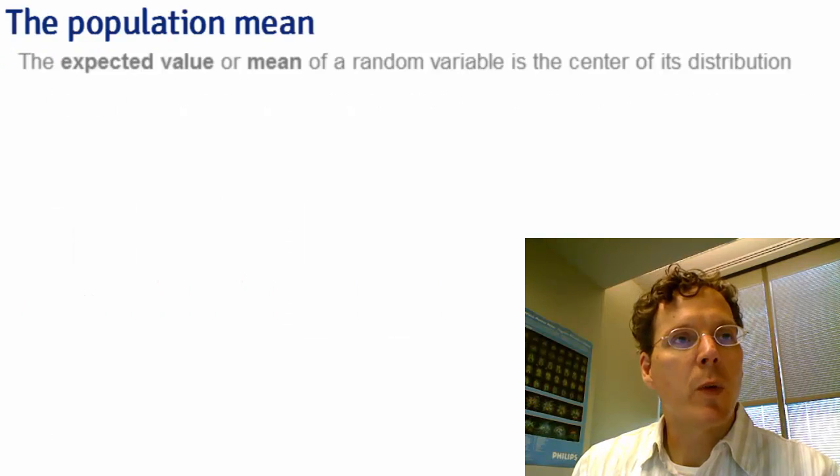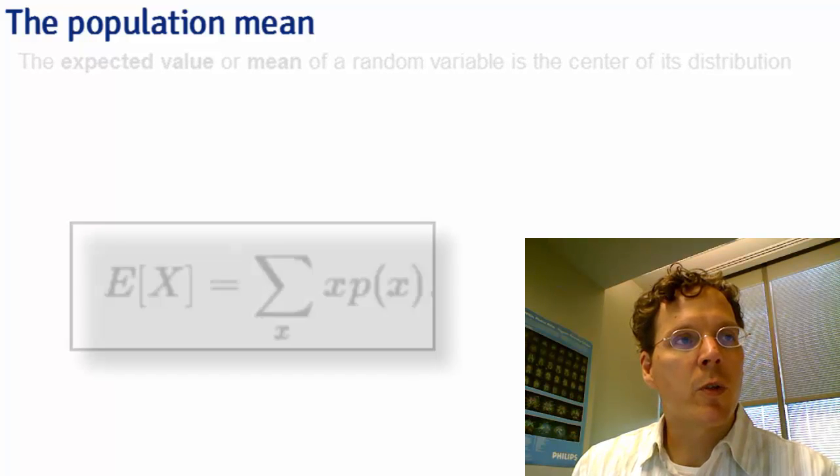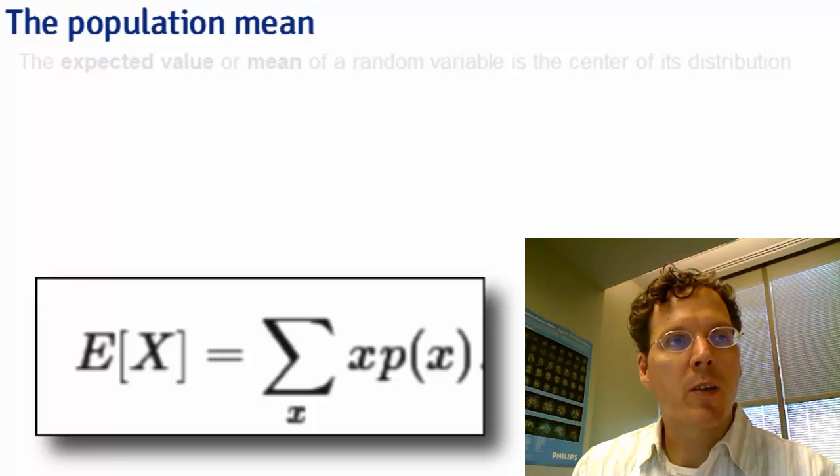The expected value or mean of a random variable is the center of its distribution. For a discrete random variable X with probability mass function p(x), it's simply the summation of the possible values that X can take times the probability that it takes them.